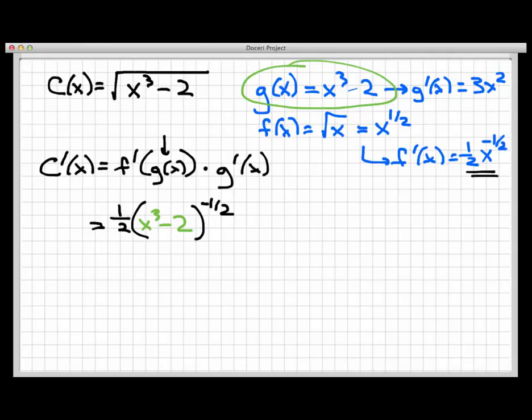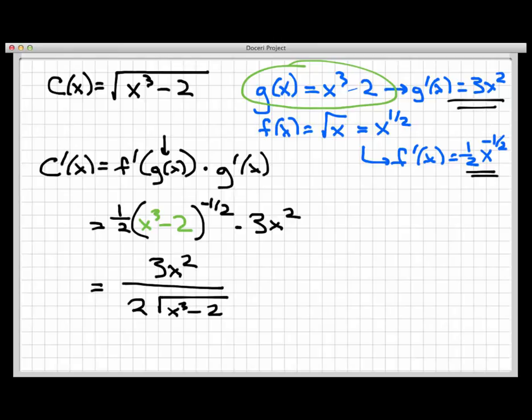Secondly, I would need to multiply this by, that's a dot there for multiplication, times g prime of x, and that's right over here. That's 3x squared, and that's the basic derivative here. I'm just gonna do one cosmetic algebra step here, not really to simplify, but just to make it look a little bit nicer. And that is, I have a 1 half and a 3 and an x squared. I'm gonna write this as 3x squared divided by 2 radical x cubed minus 2. That's just rearranging some of the pieces here. But the real derivative is done right there.